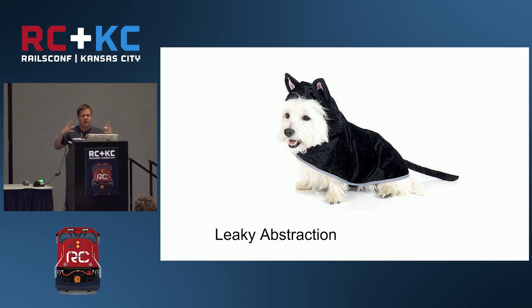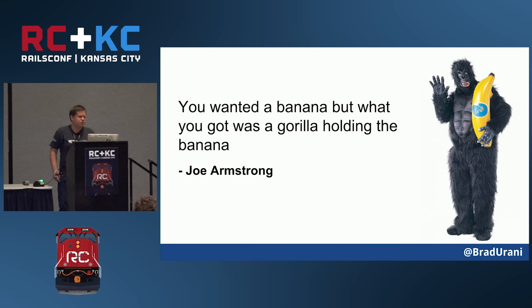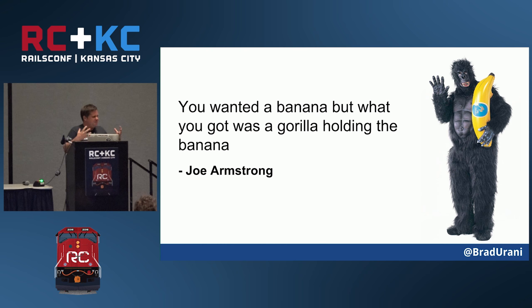Our nice English-looking syntax starts to get a little uglier when we try to make the SQL right. Joe Armstrong said about objects: you wanted a banana but you got a gorilla holding the banana. We're running a query and getting data — data is the banana. What we got is this ActiveRecord model, which is an object with all this behavior mixed in — that's the gorilla. That can be difficult to reason about when you start passing these models all around and you've lost track of the queries.